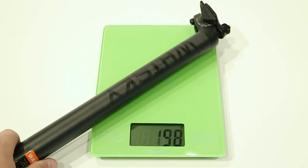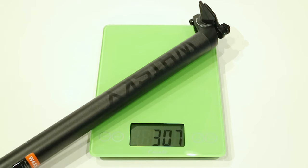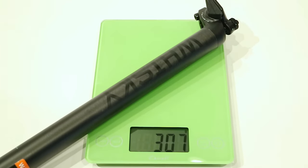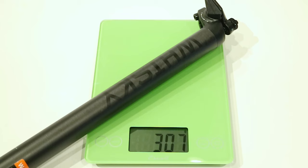So the whiskey number seven carbon seat post in a 31.6 is going to come in at 307 grams. While that's not the lightest seat post out there, that is very respectable for a carbon seat post with no weight limit and a high ASTM rating.